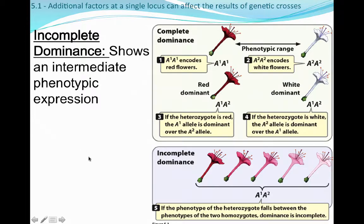To contrast that, incomplete dominance is where we see an intermediate phenotype actually being expressed. That intermediate phenotype falls within a range of the two main phenotypes. So if the phenotype is heterozygous, it falls in between the phenotypes of the two homozygotes, and dominance is really incomplete in this instance. Our two homozygotes are solid red and solid white, and if we get a heterozygote, we get variations of pink.